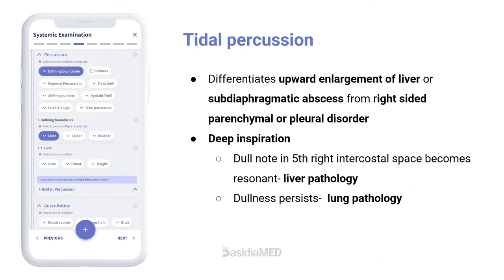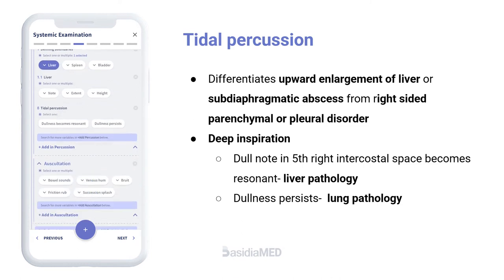Tidal Percussion is done to differentiate upward enlargement of the liver or subdiaphragmatic abscess from right-sided parenchymal or pleural disorder. If on deep inspiration the previous dull note in the fifth right intercostal space on the midclavicular line becomes resonant, it indicates that the dullness was due to the liver, which had been pushed down by the right hemodiaphragm with deep inspiration. If the dullness persists, it indicates underlying right-sided parenchymal or pleural pathology, in the absence of diaphragmatic paralysis.